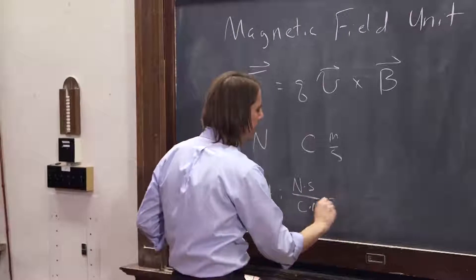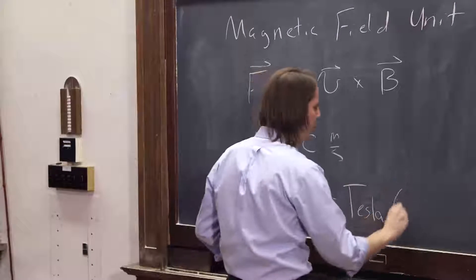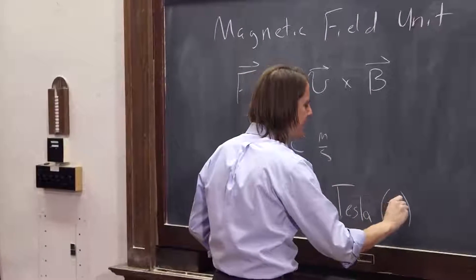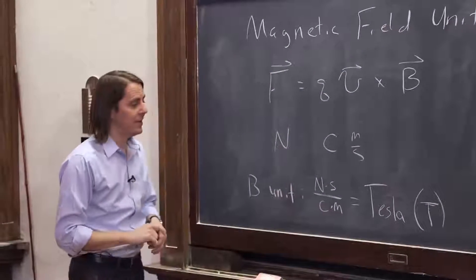And that has a name. That's called a Tesla, after Nikola Tesla. Or we abbreviate it with a big T. So that is the MKS unit for the magnetic field, the Tesla.